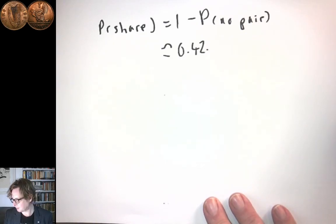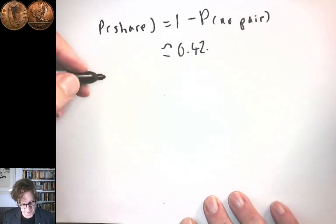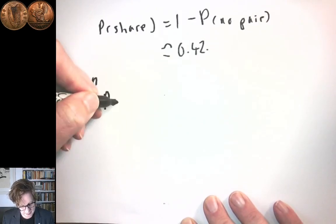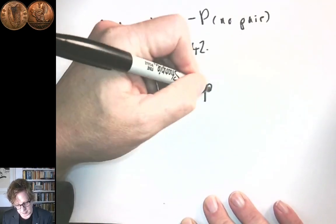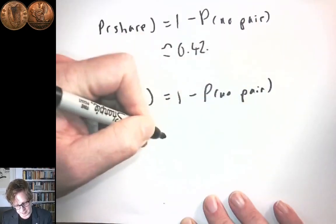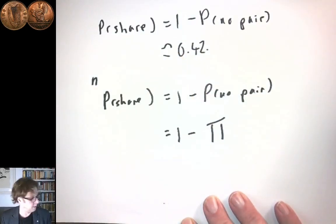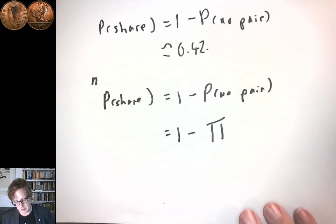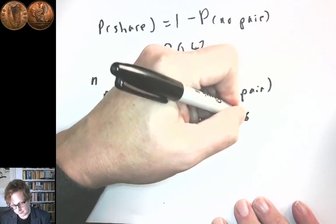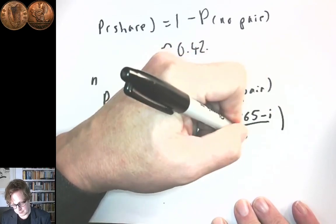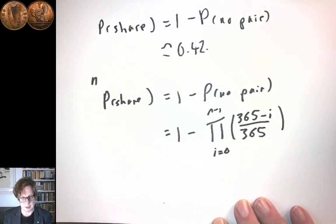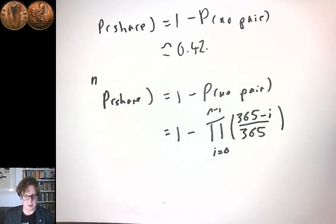We can easily work out the general case. If we now have n people, the probability that they share is one minus the probability of no pair, which equals one minus the product of fractions we had before, but now instead of having 20 of them, we have n of them — that is, the product for i equals 0 to n minus 1 of (365 − i)/365. So that gives us a formula for the probability that two people share a birthday in a group of n people.